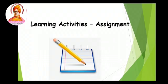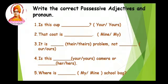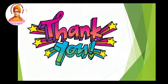Now for your learning activity — that is your assignment — write the correct possessive adjective or pronoun. Wherever the option is given, you have to write the correct answer in the blank. Is this cup yours or your? That coat is mine or my? It is their or they's problem, not ours or us. Is this your or yours camera? Or is it hers or her? Where is my or mine school bag? Do this as an activity assignment and complete it. I hope you have understood the concept very well, children. Do your assignment on time and submit.